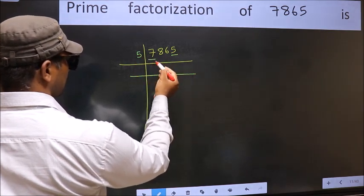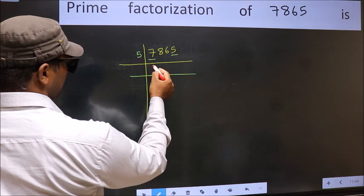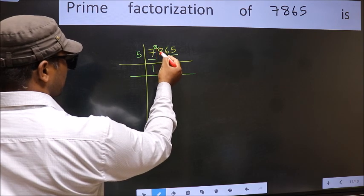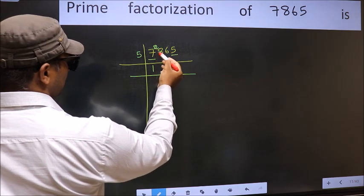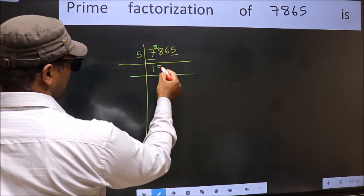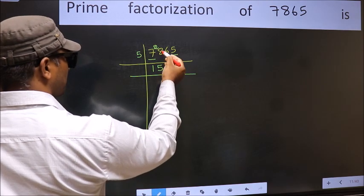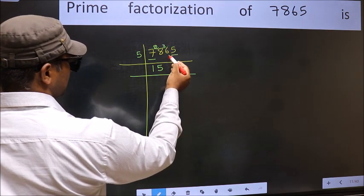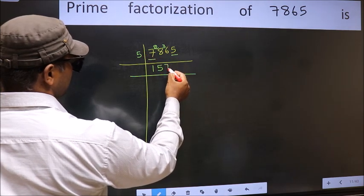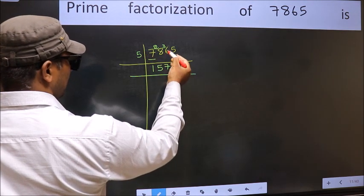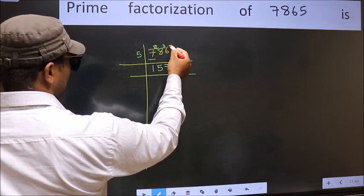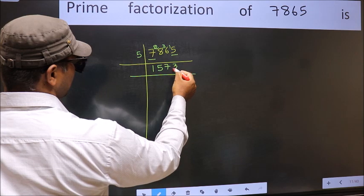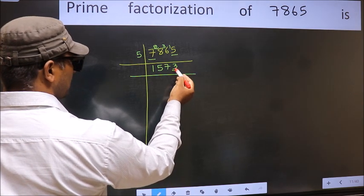First digit seven — a number close to seven in the five table is five once five. Seven minus five is two. Carry forward 28 — a number close to 28 in the five table is five fives, 25. 28 minus 25 is three. Carry forward 36 — close to 36 in the five table is five sevens, 35. 36 minus 35 is one. Carry forward 15 — we get 15 in the five table as five threes. So 7865 divided by 5 gives 1573.